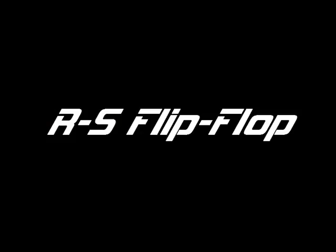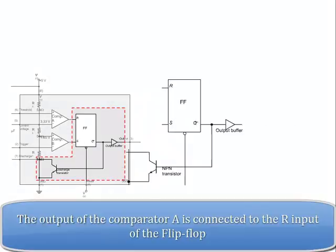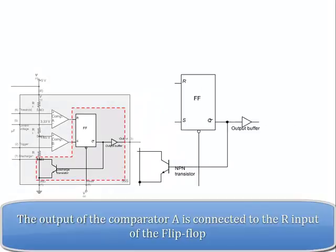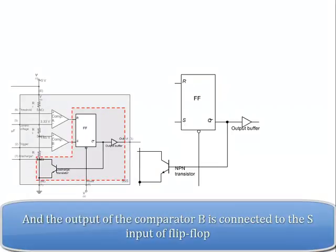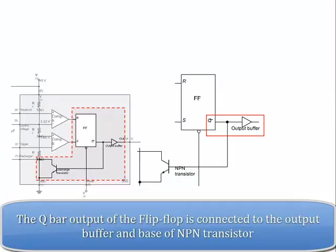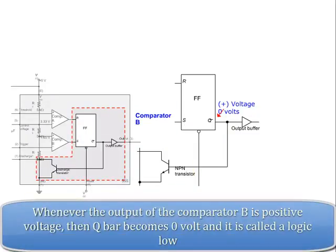RS Flip-Flop. The output of comparator A is connected to the R input of the flip-flop, and the output of comparator B is connected to the S input of the flip-flop. The Q-bar output of the flip-flop is connected to the output buffer and the base of the NPN transistor. Whenever the output of comparator B is positive voltage, Q-bar becomes zero volts, and it is called a logic low.